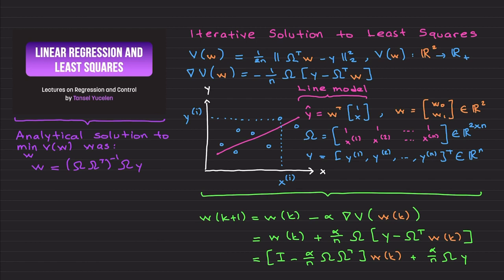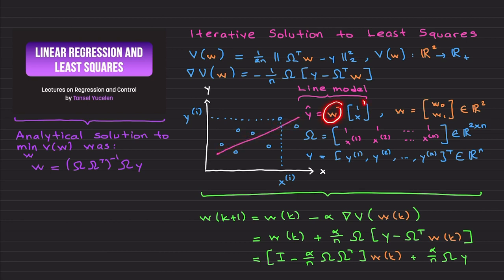Now I am going to apply gradient descent — one of the most fundamental methods — to linear regression, finding an iterative solution to the least squares problem. From the previous video: for fitting a line model to data, we formulate the cost function V as a positive function from R² to R, where w includes w₀ and w₁. We have N data points and we want to fit a line in a least squares fashion.